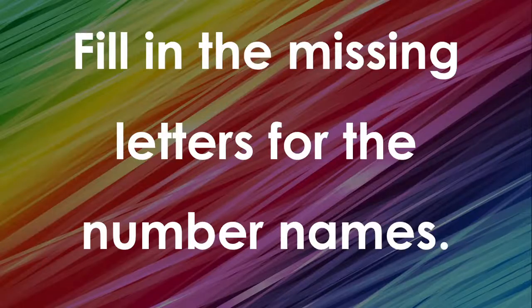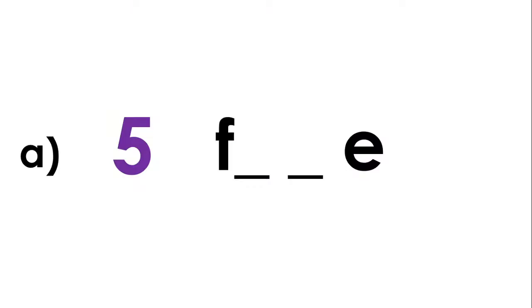Now it's your turn. You're going to fill in the missing letters for the number names. So we're going to do this one together. A. We have the number 5 here. And there are two missing letters. So we have F and E written in for us, what two letters are missing? F I V E 5. So you see I fill in the missing letters which is I and V. And now I have the word 5 spelled out here.